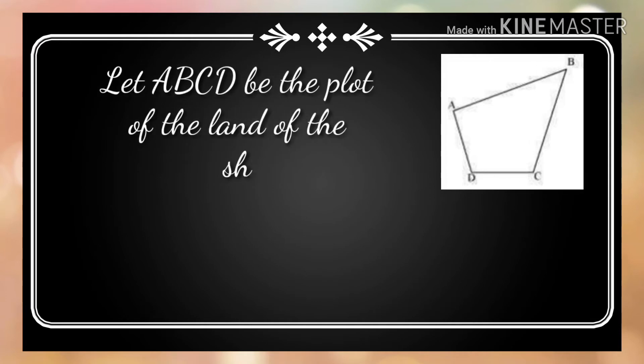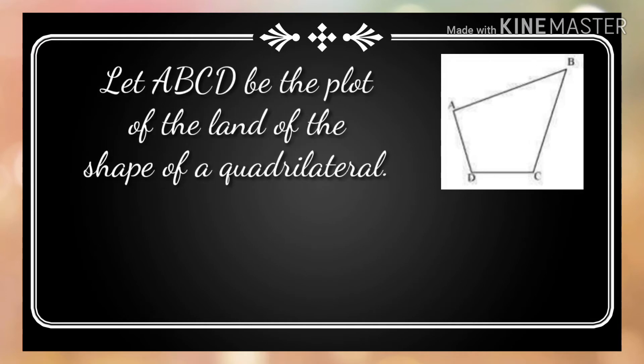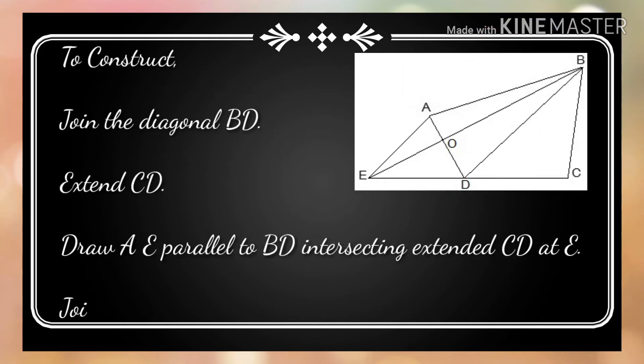Let ABCD be the plot of land in the shape of a quadrilateral. We assume that ABCD is the field of Etwari. To construct: join the diagonal BD, extend CD, draw AE parallel to BD intersecting extended CD at E, and join BE intersecting AD at O.